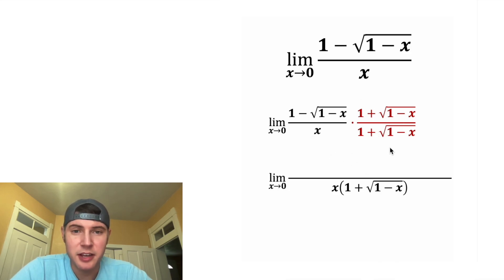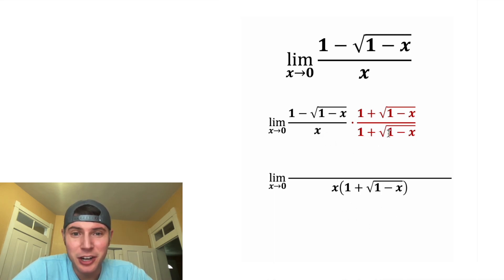On the bottom, we're just going to leave it as x times the conjugate. We're not going to distribute the x — usually for the factor that isn't the conjugate, you can just leave it as the product of the two.